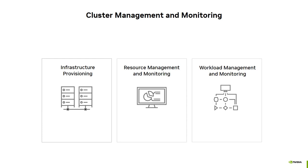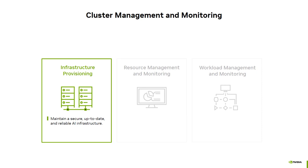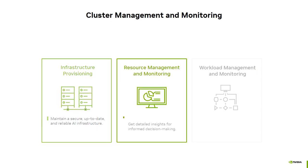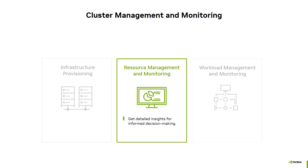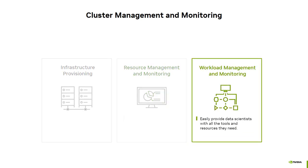There are three main concepts to consider when managing AI infrastructure. First is infrastructure provisioning — the process of setting up and configuring hardware, including servers, switches, storage, and other components of the AI cluster. The next concept is resource management and monitoring, which includes getting metrics and data from the cluster to determine performance and make updates. The final concept is workload management and monitoring, ensuring data scientists and AI practitioners have the tools they need and understand cluster usage.